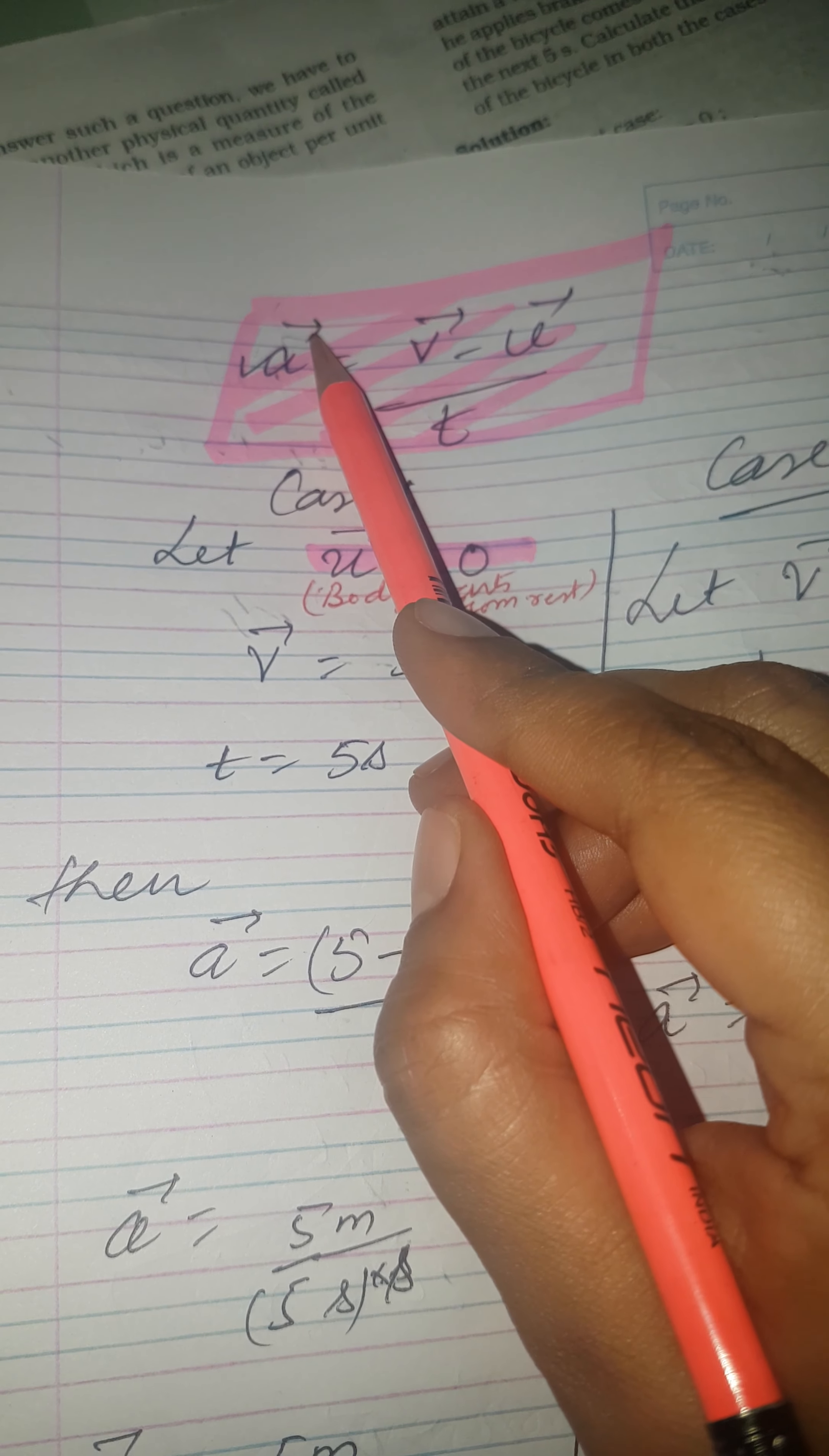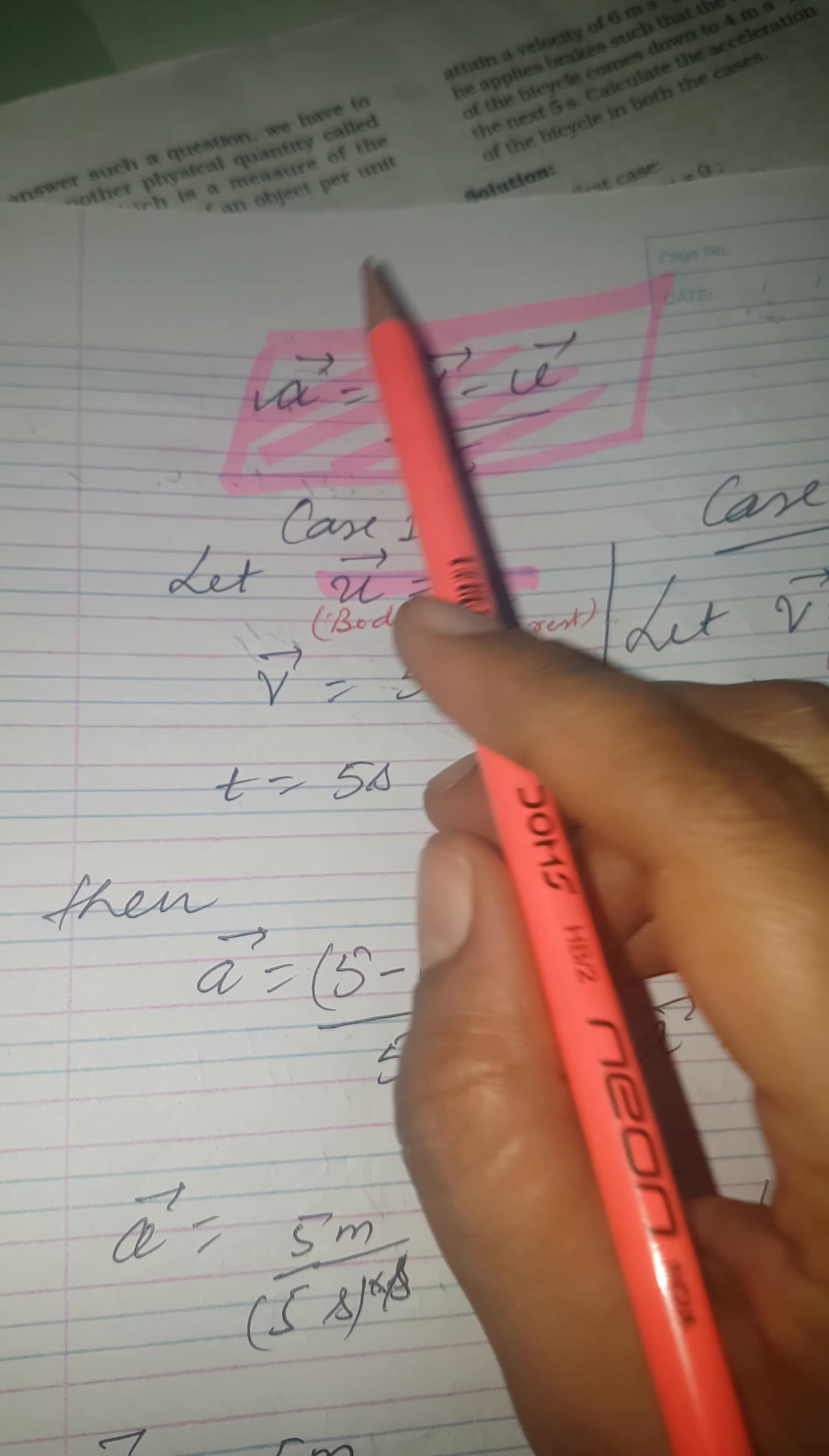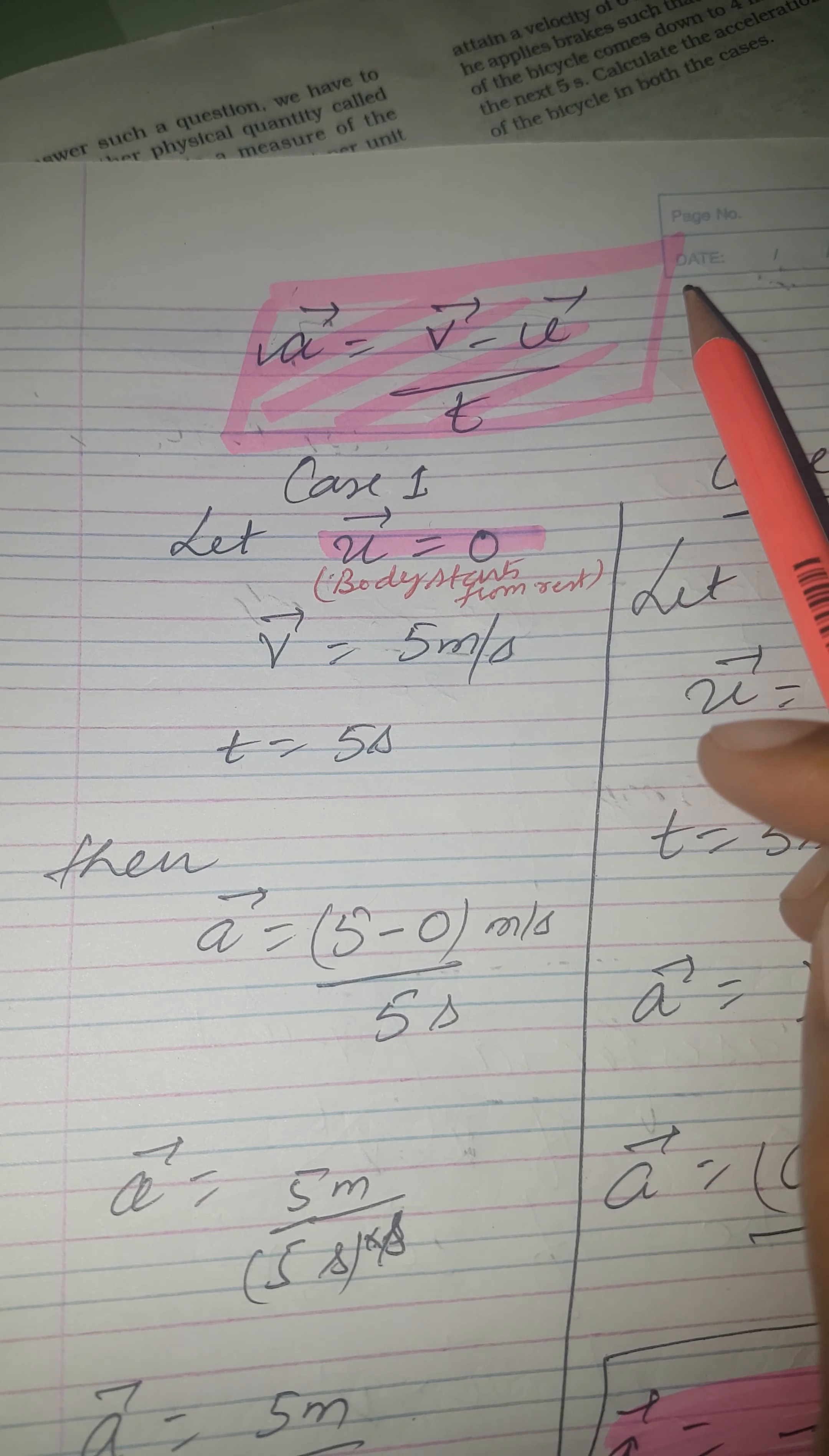Why this vector sign we have to write? Because acceleration is a vector quantity. Now why is this a vector quantity? Because this depends on velocity. So that is why acceleration is a vector quantity. Now according to the heading, what does this signify? Rate of change of velocity.